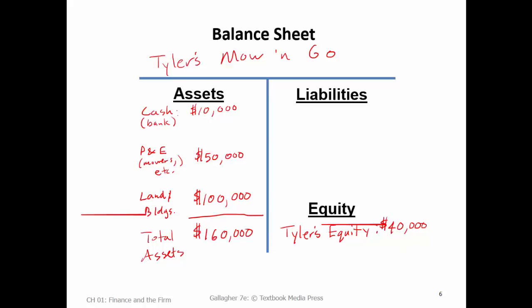We've been successful for a few years and retained another $20,000 in earnings, so I have $40,000 in personal equity in the business. That means the rest of my assets would have to be funded by liabilities. In any business, they typically operate on the basis of OPM — other people's money. That's smart because it might take a long time to save up $160,000, and that time could be spent running the mowing business and making good money.